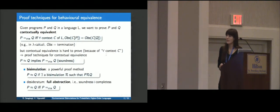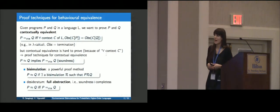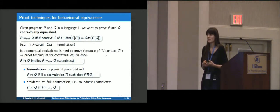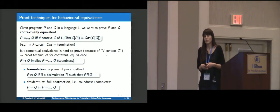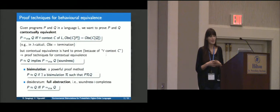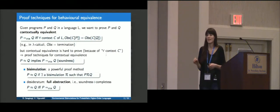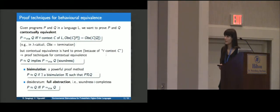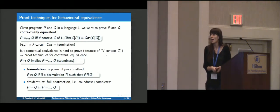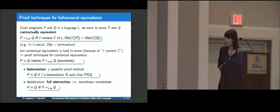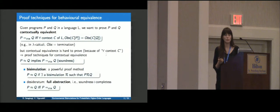Bisimulation gives us a very powerful proof method for contextual equivalence. If we have a bisimulation, then to prove two programs equivalent, we just have to exhibit a relation that contains the two programs and that satisfies the bisimulation equivalence. As a desideratum, we do not only have soundness but also completeness, and so we would like our bisimulation to be fully abstract with respect to contextual equivalence.